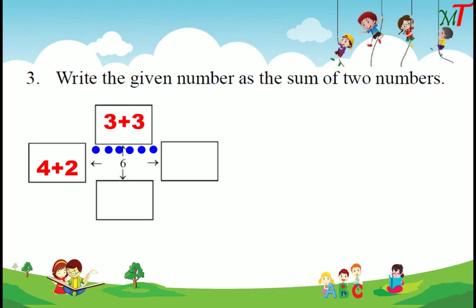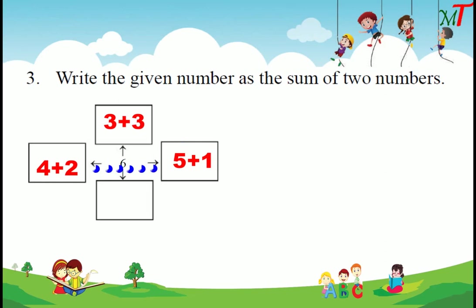Next, we take 6 dots again. We move 5 into one group and only 1 into another group, so 5 plus 1 equals 6. Then 2 dots in one group and the remaining 4 dots in another group, so 2 plus 4 equals 6.